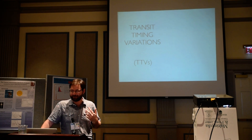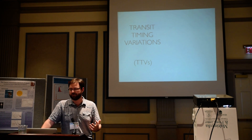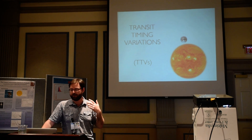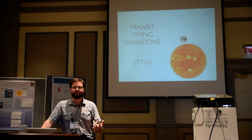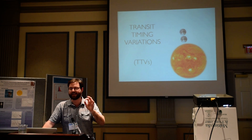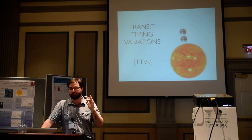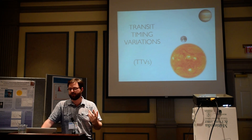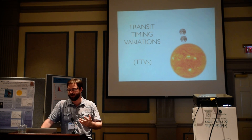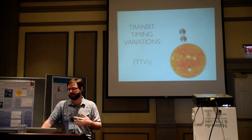But today I'm going to talk about transit timing variations. If you have a star with one planet around it, you'd see this planet transiting completely periodically — once per orbit, at exactly the same time. If you had multiple planets, you'd have dynamical interactions between them. Every time they pass near each other, one will come a little early, one will come a little late.